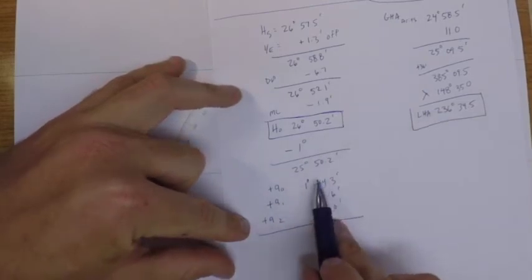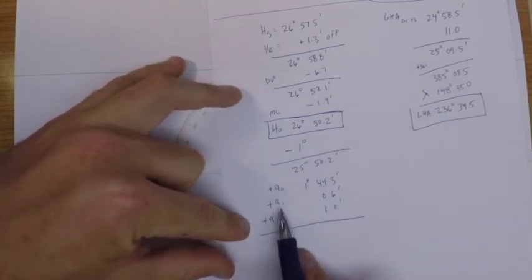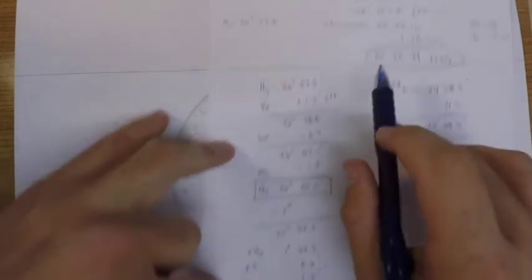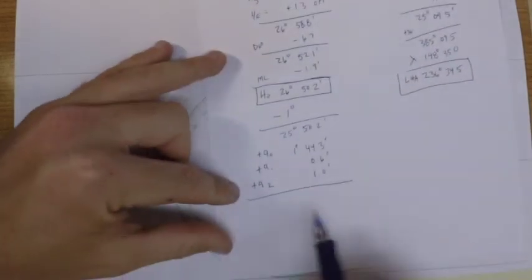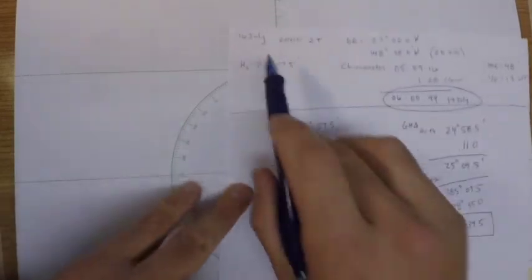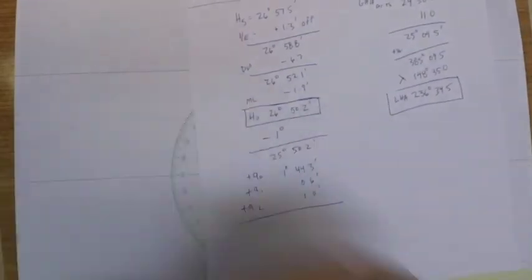This one came from our LHA of Aries in the Polaris tables, this one was for the latitude about 27 degrees, and this one was for the month. We were in July so that was the correction for that. All of those corrections just came right from the Polaris tables so I can apply them now.